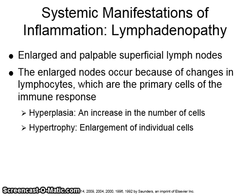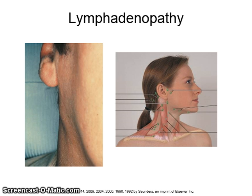Hyperplasia is an increase in the number of cells. Hypertrophy is an enlargement of individual cells. The lymphoid tissue in Waldeyer's ring, which is the palatine, lingual, and pharyngeal tonsillar tissue, may also undergo these changes. These are images of lymphadenopathy and the lymph nodes in the head and neck. When palpating for lymphadenopathy, do not get confused with salivary glands.